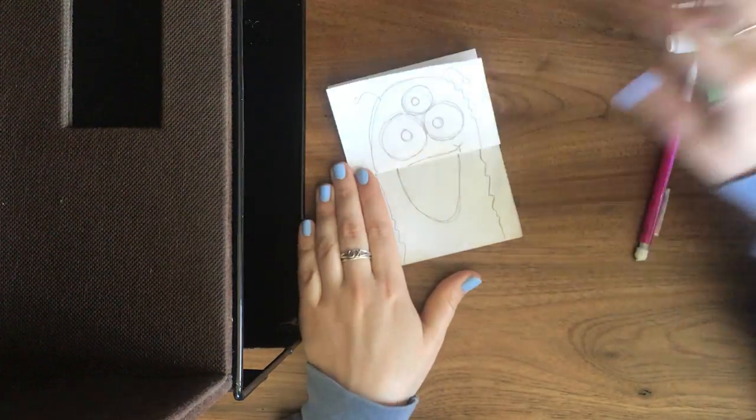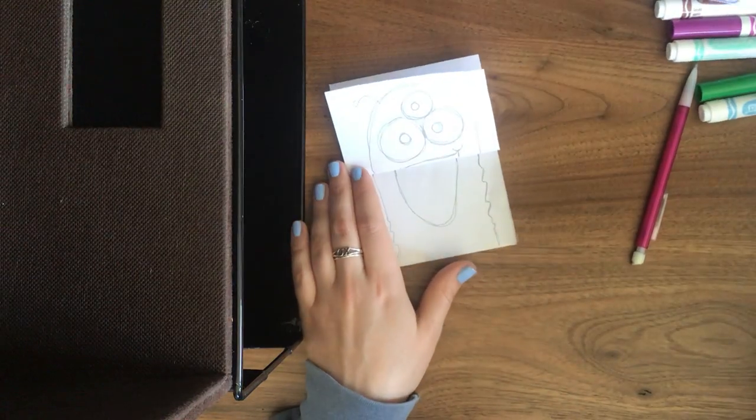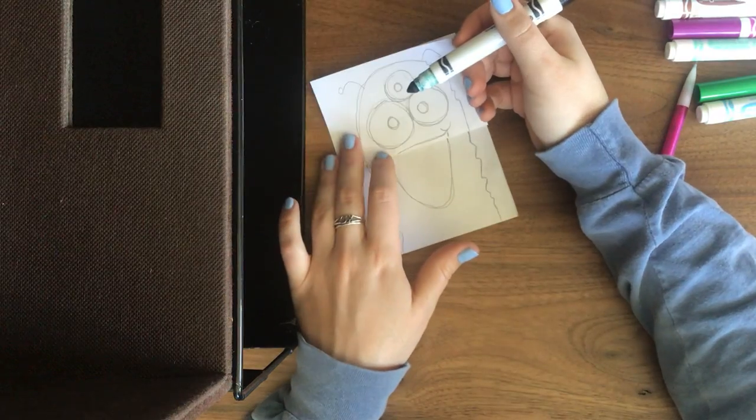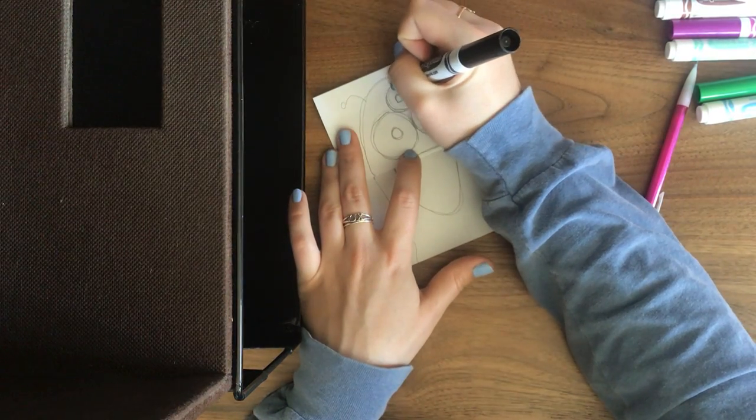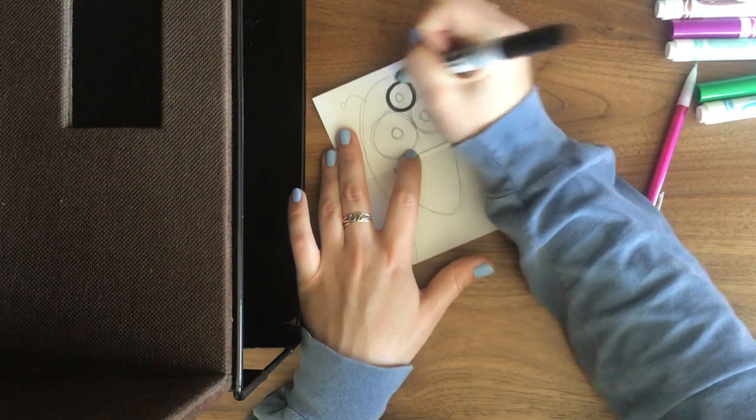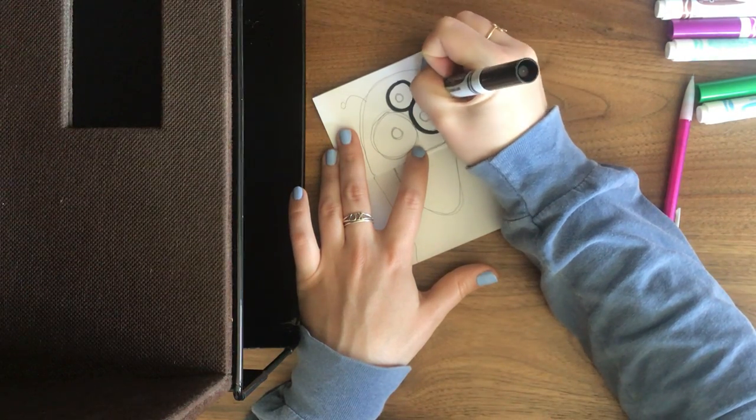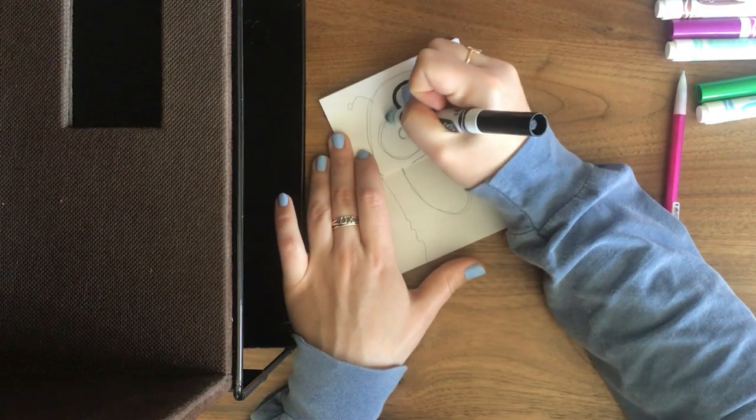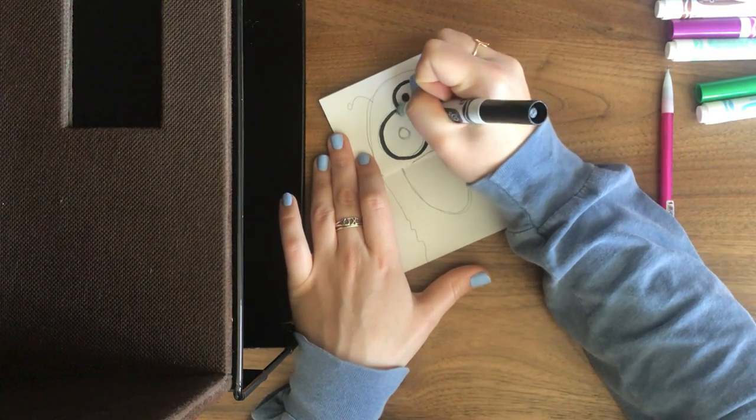Then what I like to do best is I like to go over all my pencil lines with a black marker. If you use one of these markers, one of the Crayola, it's going to be a thicker line. If you use Sharpie, it's going to be a thinner line. I'm just going to use Crayola marker. It doesn't matter what you use.